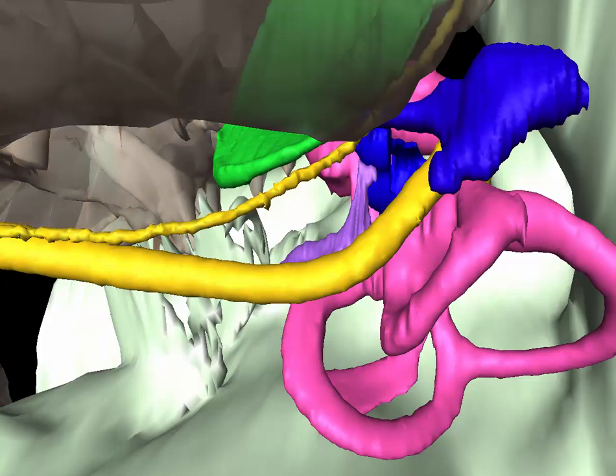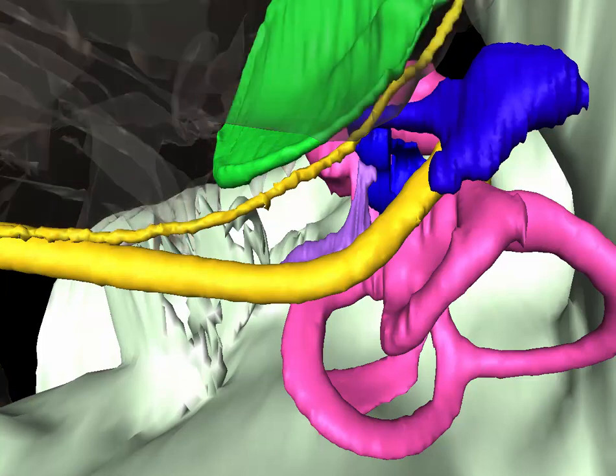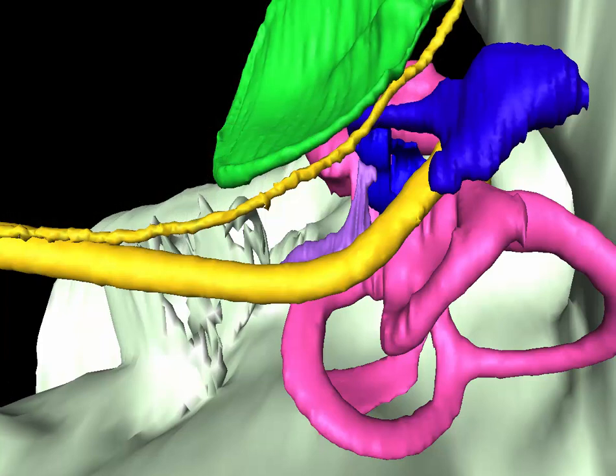The semicircular canals can clearly be seen. The relation of the endolymphatic sac to the canals is also seen.